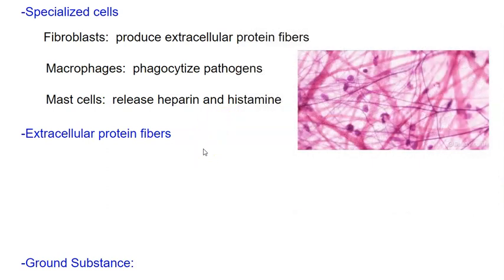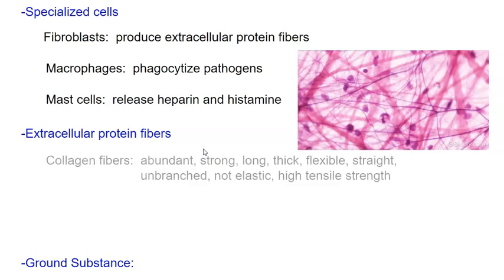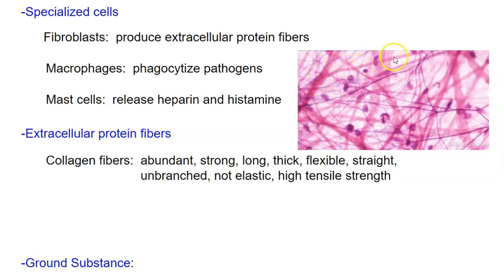We have extracellular protein fibers — collagen fibers. Those are the pink ones we see here. They're abundant, thick, long, and straight. They don't branch. Collagen is not very elastic, meaning it doesn't stretch very much. It resists stretching along its long axis — that's what tensile strength means. So even though it's flexible and can bend, you can't stretch it very far.